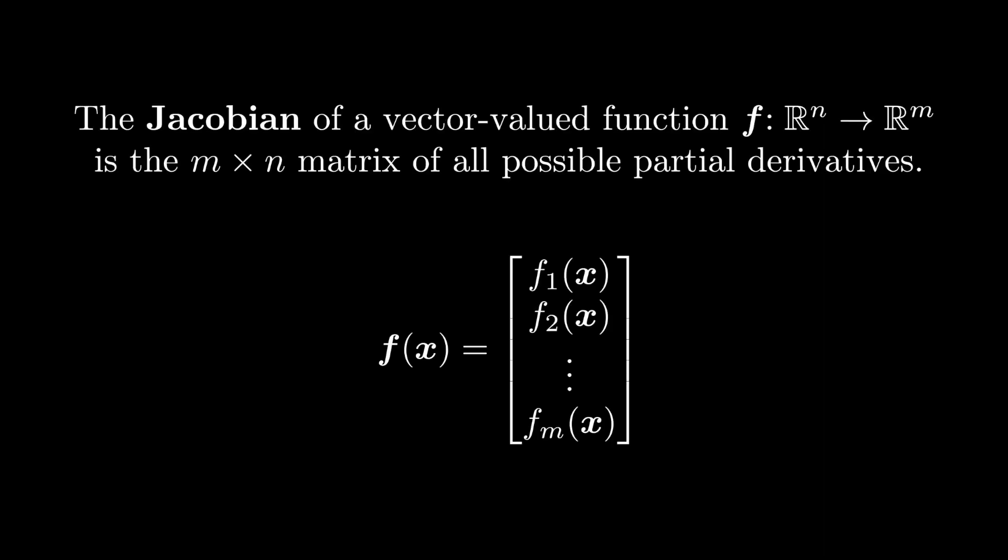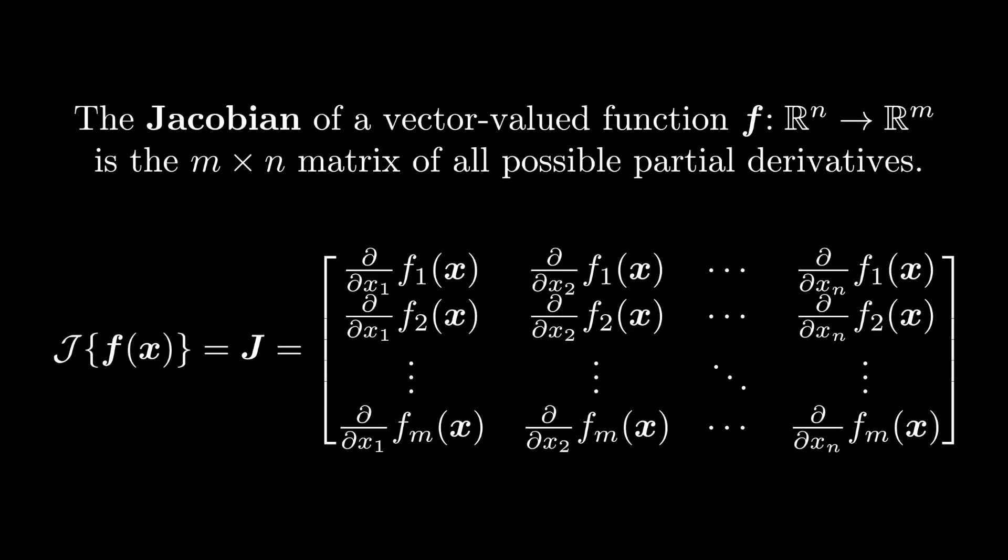When we have a function like this, the Jacobian matrix is the matrix of all possible partial derivatives. That is, the partial derivative of every output dimension with respect to every input dimension. The rows correspond to output dimensions, and the columns correspond to input dimensions.